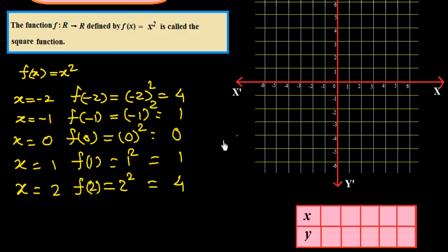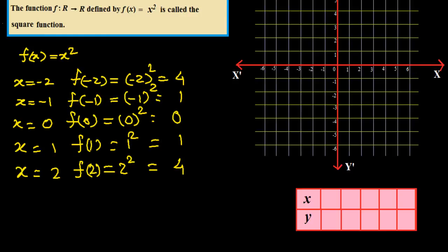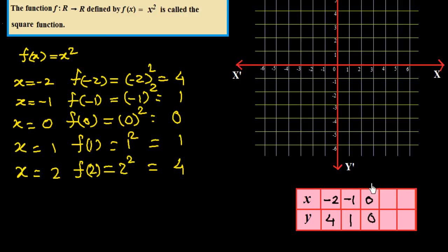Now we plot all these points. First I put them all in a table so you can easily understand. x equal to minus 2, y is equal to 4. x equal to minus 1, y is equal to 1. x equal to 0, y is equal to 0. x equal to 1, y is equal to 1. x equal to 2, y is equal to 4. So we have these coordinates.